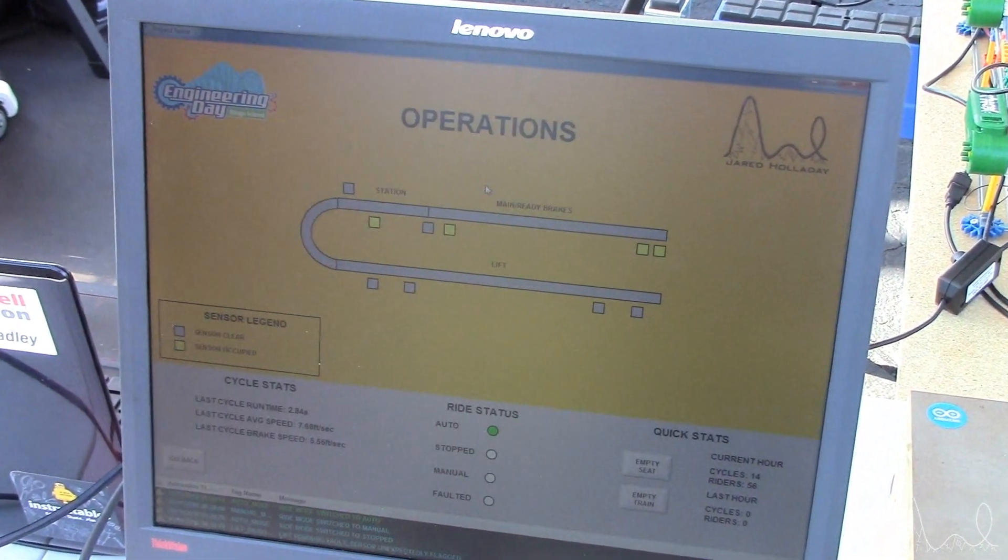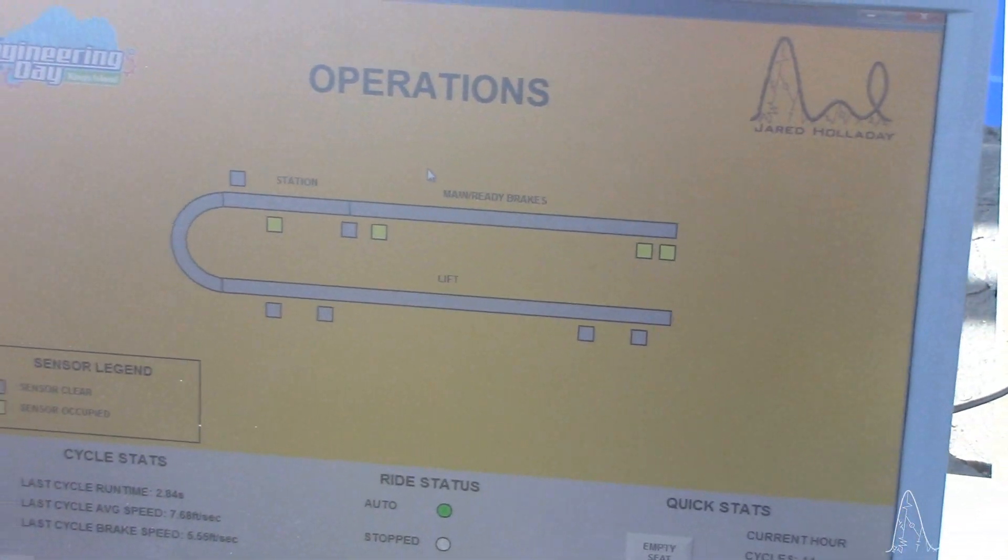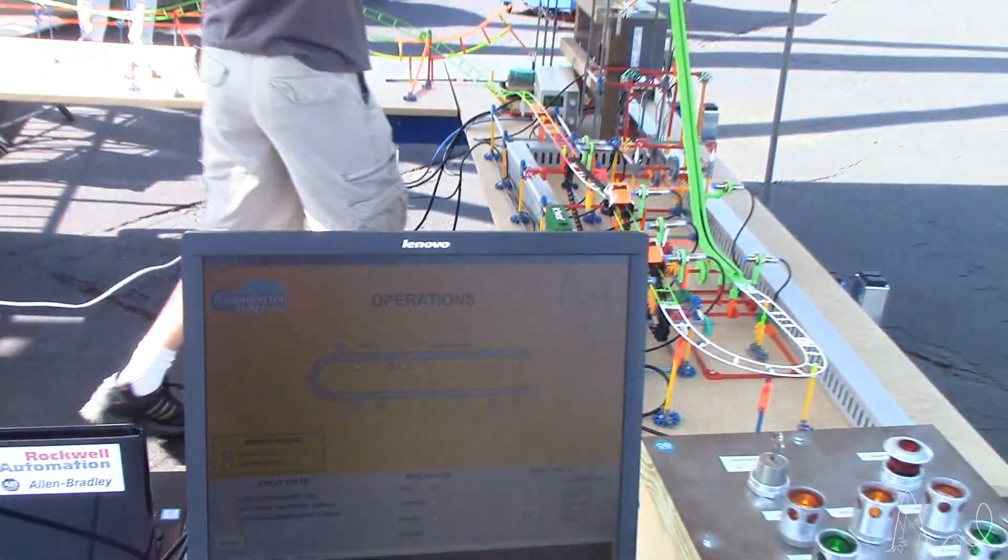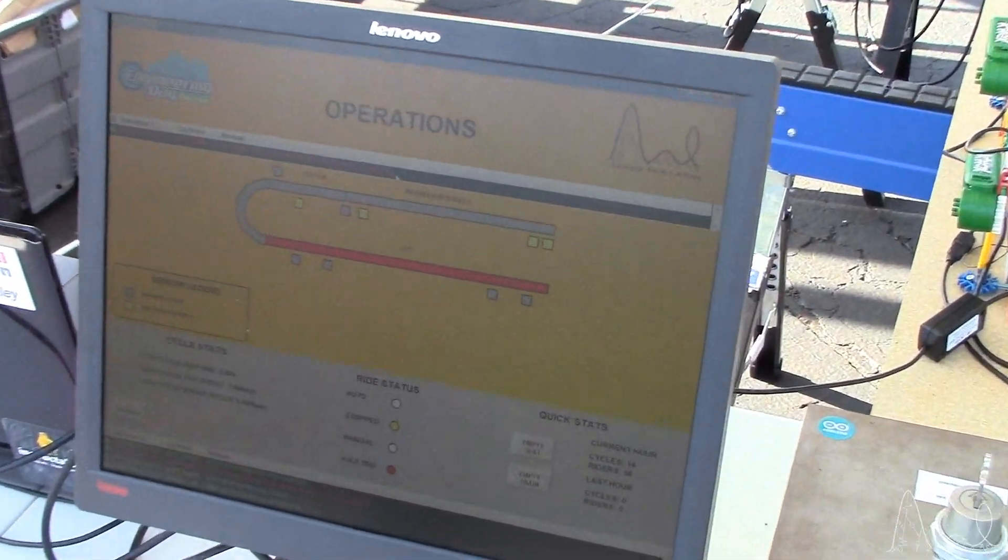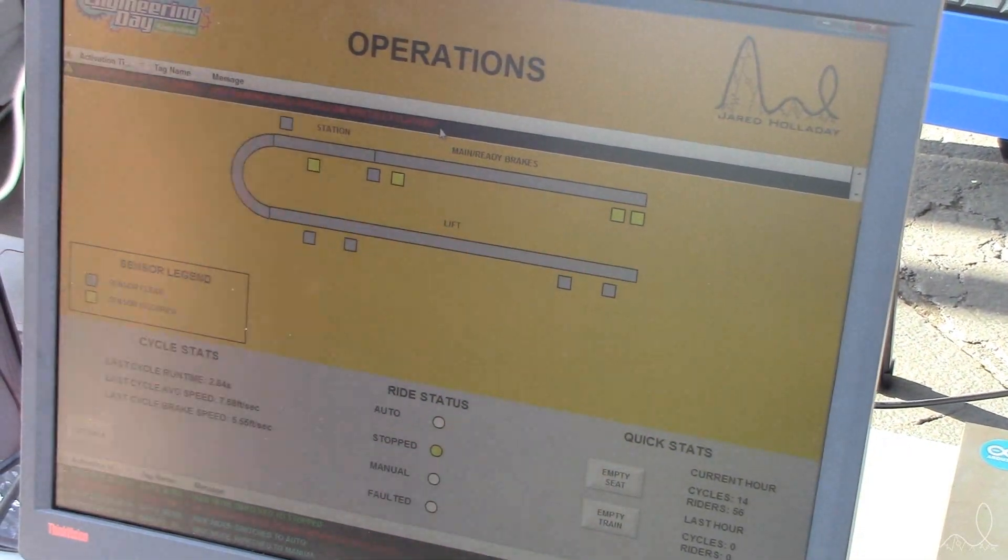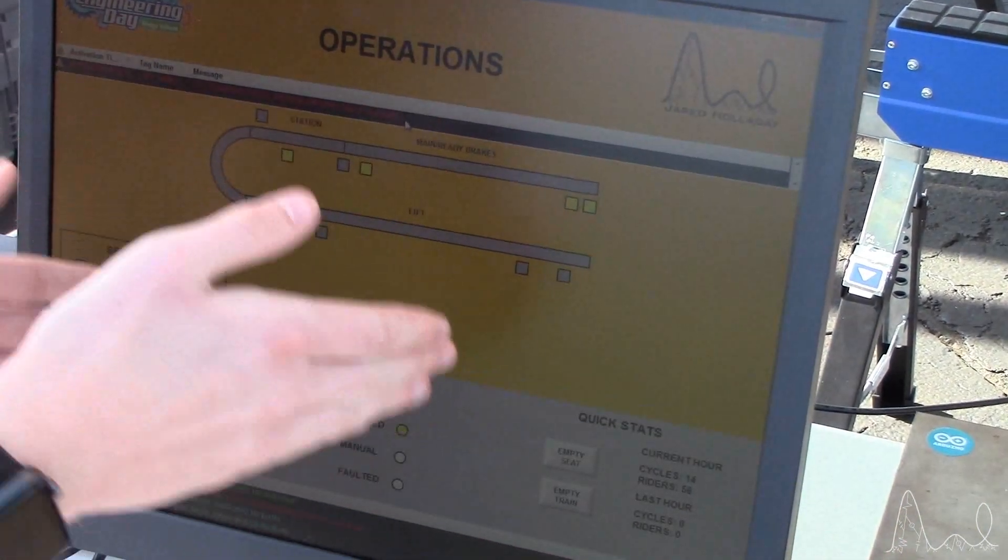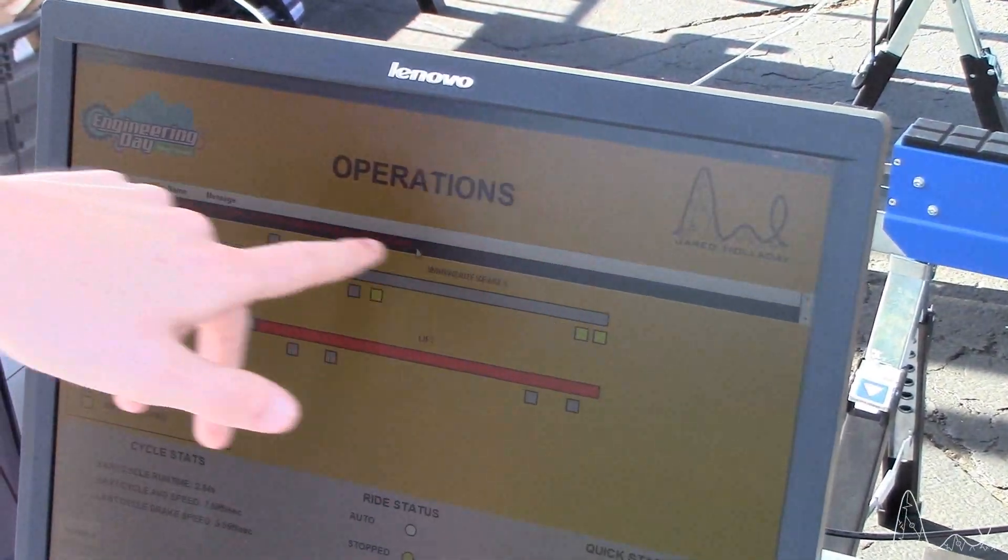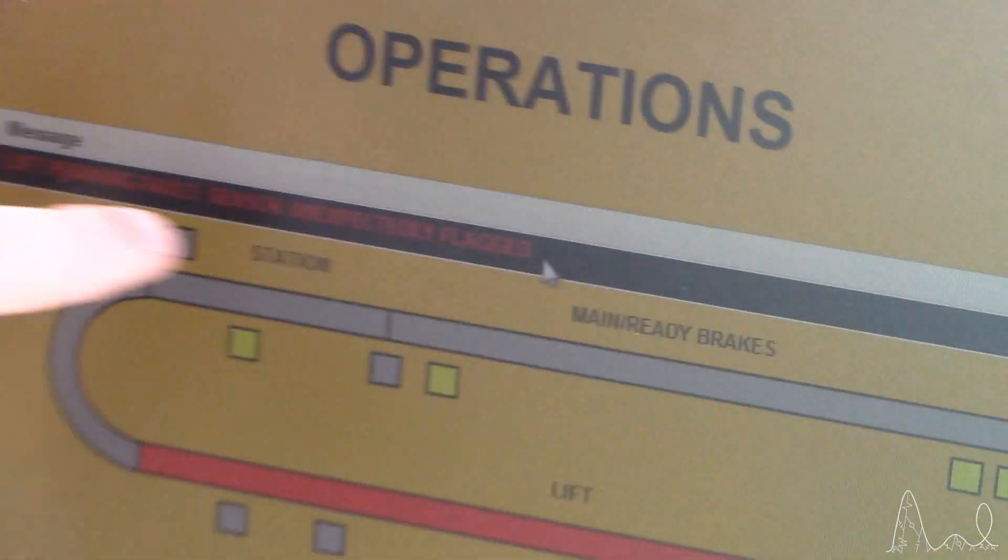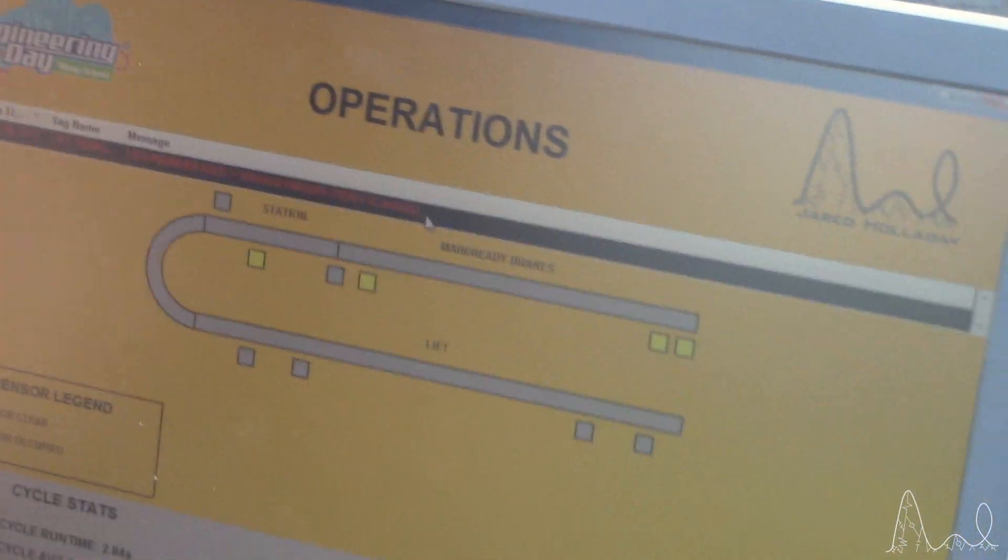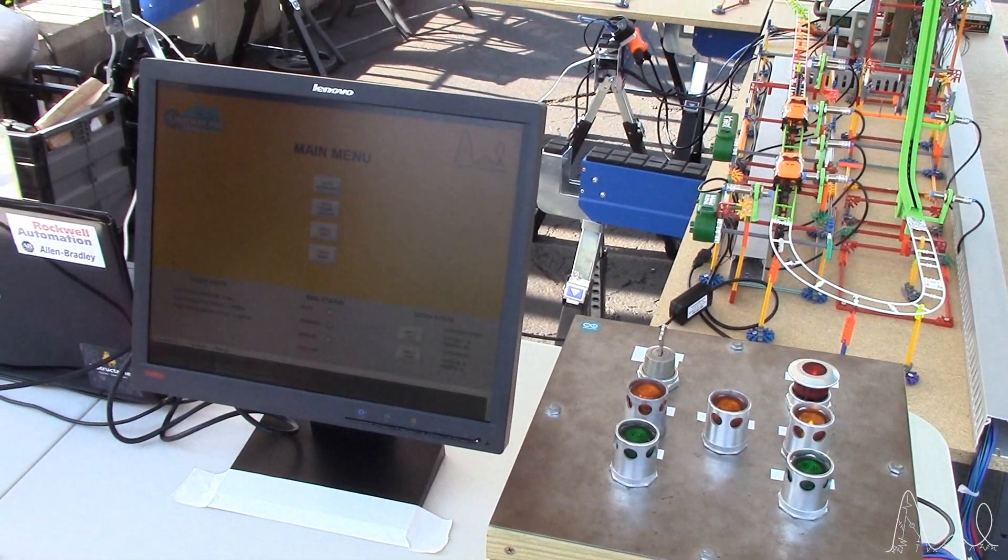So let's say in the case that we do throw a fault on the operation display, which is what the operators would normally be looking at. You can see that now the block has gone red and flashing, basically to tell the maintenance guy or the operator that the problem is here. And you can see that we also get a second display that shows where or what the fault is, that it's a lift parking fault and that the sensor was unexpectedly flagged.